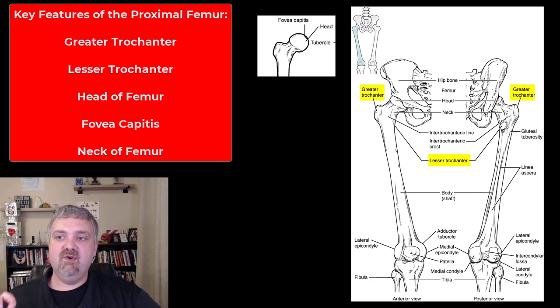Key structures here, first of all, we have the greater and lesser trochanter, very important attachment points for muscles there. In the humerus, they're called greater and lesser tubercles, so don't get that confused, greater and lesser trochanters.